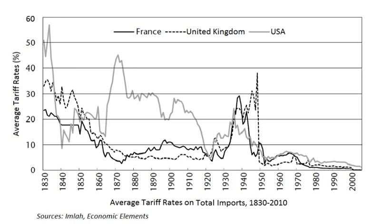The Ottoman Empire served as an example to Disraeli, who disapproved of British free trade, particularly during the discussions on the abolition of the Corn Laws — the system of pure competition and perfectly applied for a very long time. Free trade was applied in Turkey, and what did it produce?